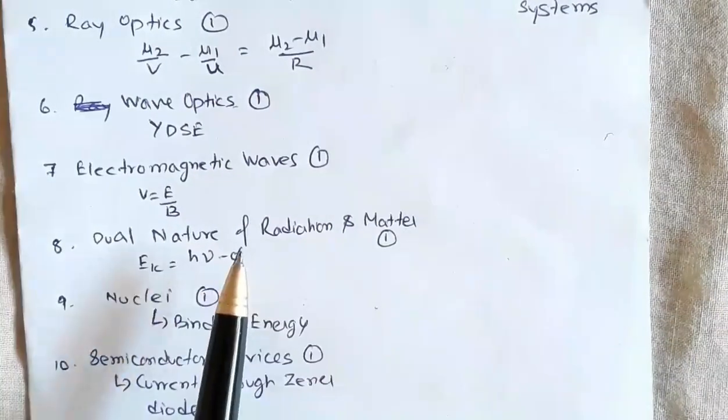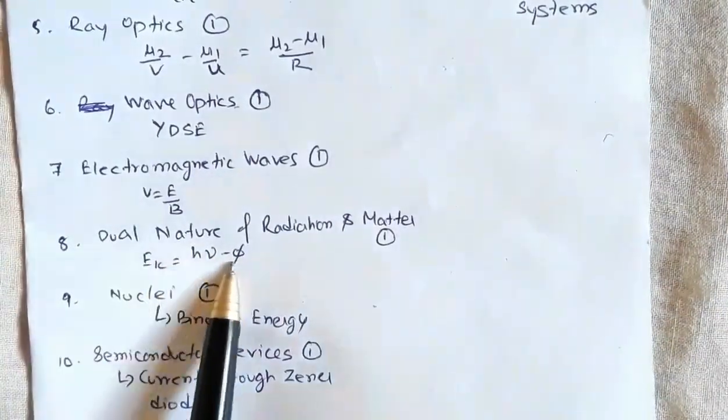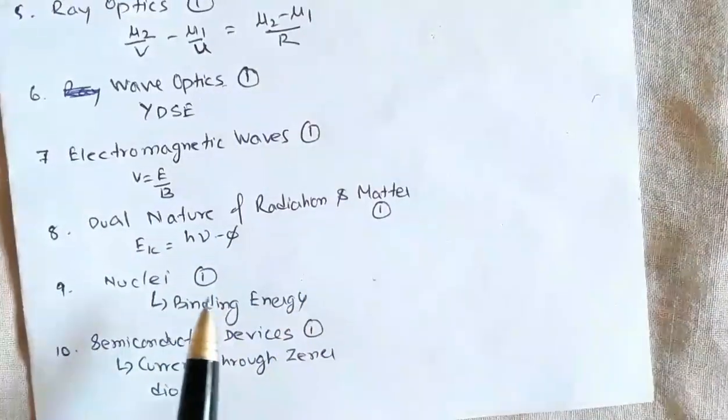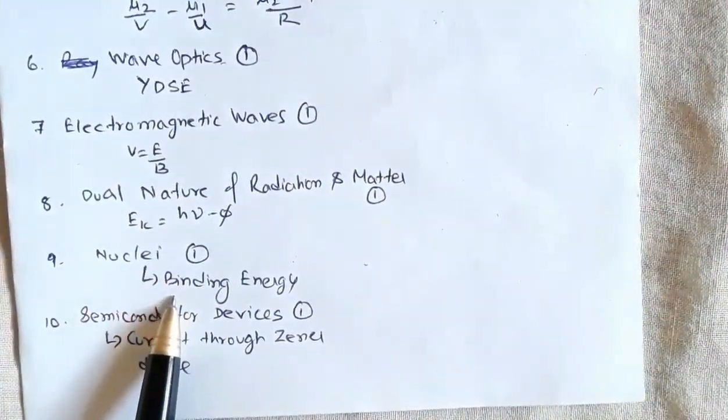Dual nature of radiation and matter: one question from Einstein's photoelectric relation. On 9th January morning shift again one question was asked on the same concept. From the topic nuclei, one question was asked.